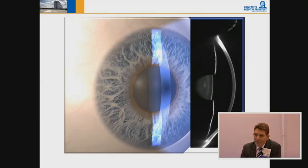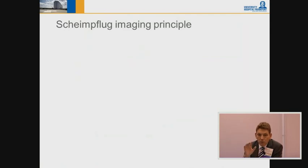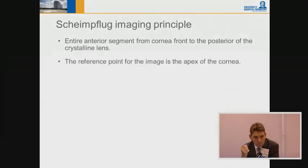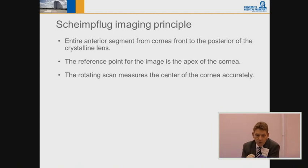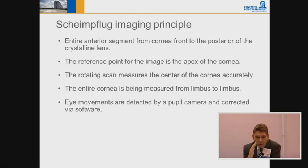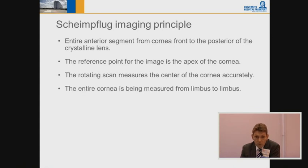With Scheimpflug evaluation you get anterior segment imaging. You can see that sometimes the angle structures are not well defined, but you can already see the iris, cornea, and lens. Basically, you have a camera that moves around the eye, takes different slits, and the different slits are then imaged into a picture. The Scheimpflug imaging principle captures the entire anterior segment from the cornea front to the posterior of the crystalline lens.